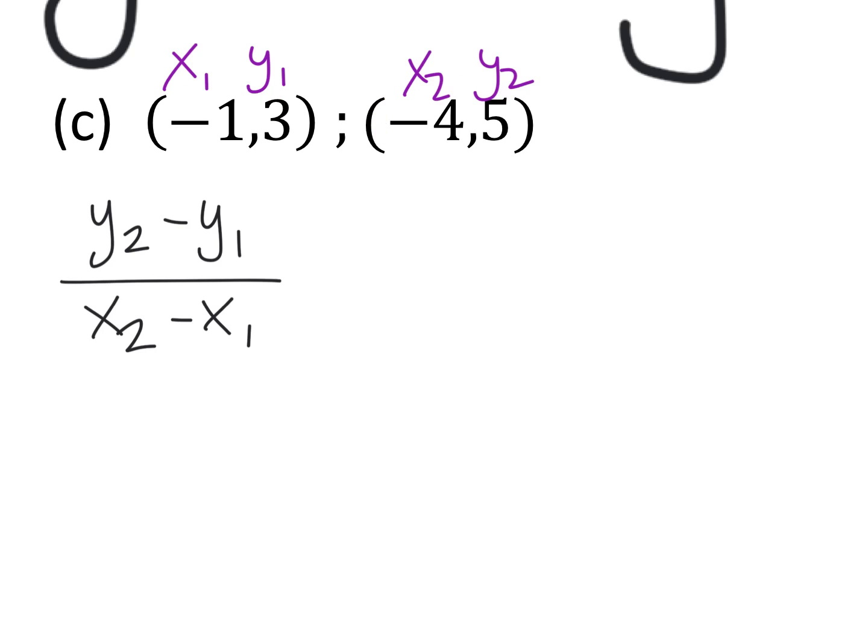Now I'll go ahead and write this equation out, but I'm going to replace the x1, x2, y1, and y2 with their corresponding values. So we have 5 minus 3 all over negative 4 minus negative 1. The thing you're going to want to be careful with is to make sure that you don't mistake this minus with that negative, otherwise you're going to get negative 4 minus 1 which is negative 5. But in actuality the answer here in the denominator is negative 3.